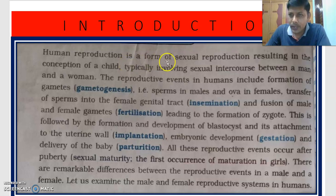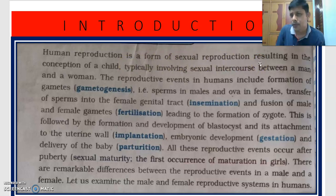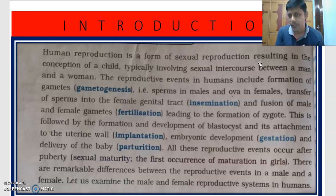Human reproduction is a type of sexual reproduction resulting in conception of a child because of sexual intercourse between a man and woman.